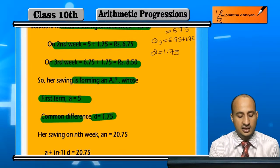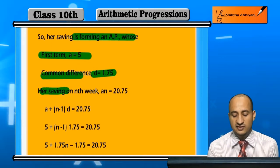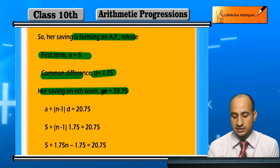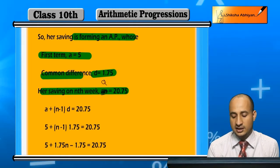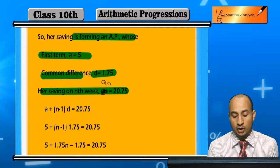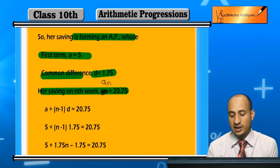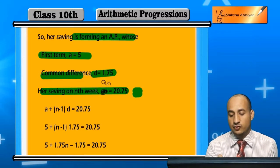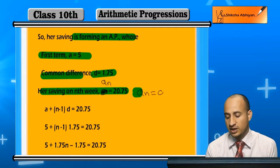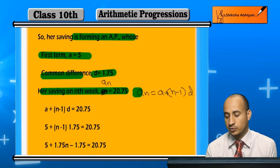Now if we look at the saving on the nth week, how much is the saving? It is An. We can use the formula: An is equal to a plus (n minus 1) times d. This is the formula for the nth term of an arithmetic progression.